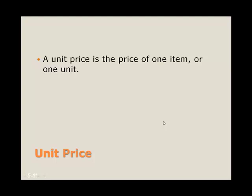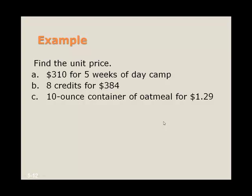A unit price is a price of one item, or one unit. So some examples, if we want to take a look at the unit price, if we're paying $310 for 5 weeks of day camp, how much is it per week? So we divide the dollar amount on top, and then the number of weeks in the bottom. So we see that 5 goes into 310 sixty-two times, so it looks like this is going to be $62 per week.